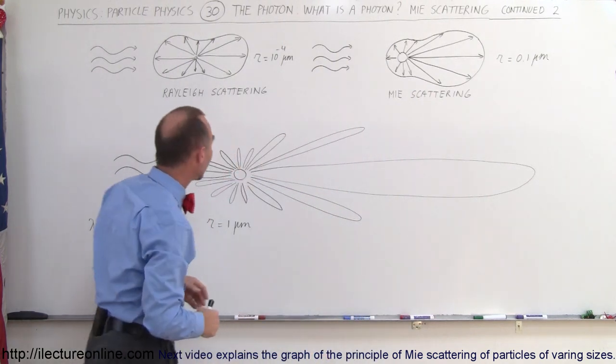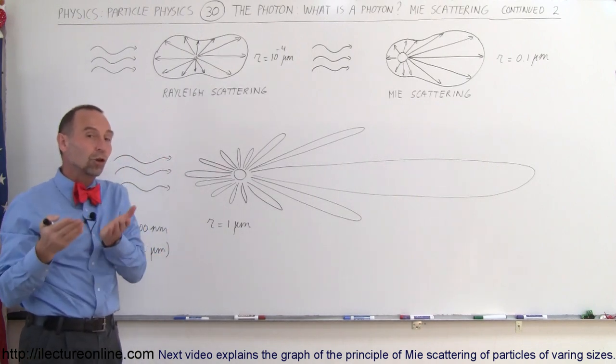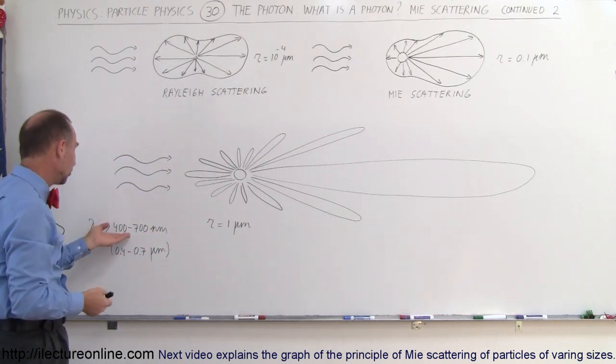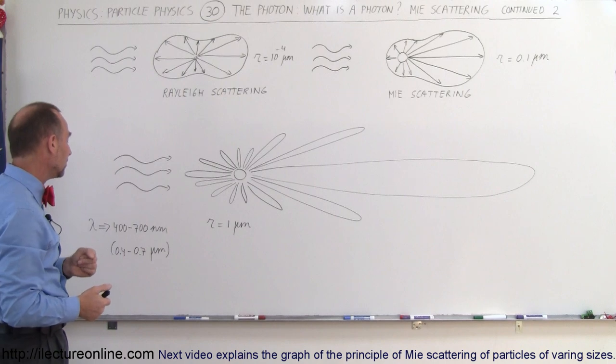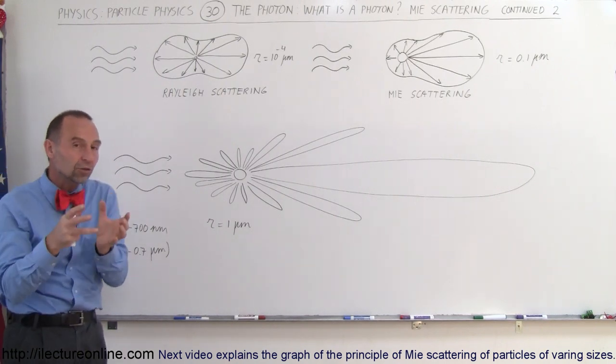And then you can see as the particle gets very large, here a particle in the range of about 1 micrometer, which is larger than the wavelength of visible light. Visible light is from 400 to 700 nanometers, which is 0.4 to 0.7 micrometers.